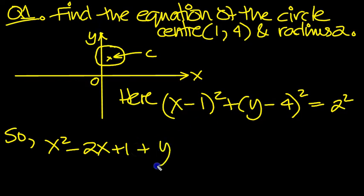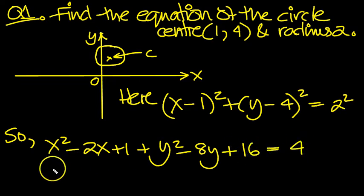Plus y squared, minus 2 lots of minus 4, which is minus 8y. Minus 4 times minus 4 is plus 16, equals 4. Now let's just tidy it up then.